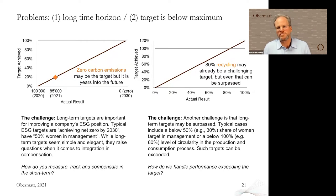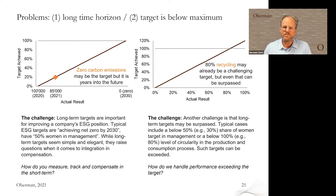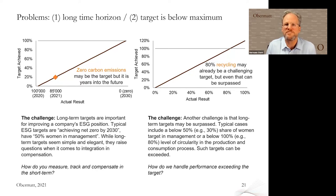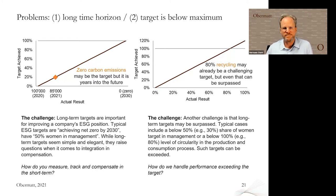We also have the problem that maybe your target is below the maximum. What do you do if you have a target that is below 50% women in management, for instance? How do you accommodate that?